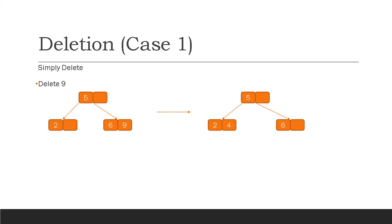Now let's move on to deletion in 2-3 trees. Similar to insertion, there are three cases in which deletion might occur. The first case is when we simply delete a value. If we want to delete 9 in the left tree, we search for 9: since 9 is greater than 5, we move to the right subtree; since 9 is greater than 6, we find it as the second value and simply delete it. There is no change in the structure of the tree.